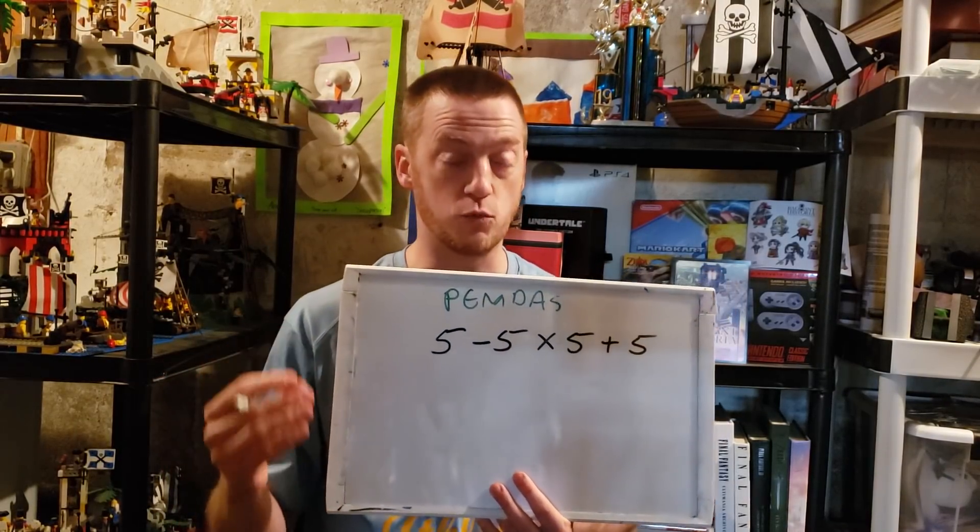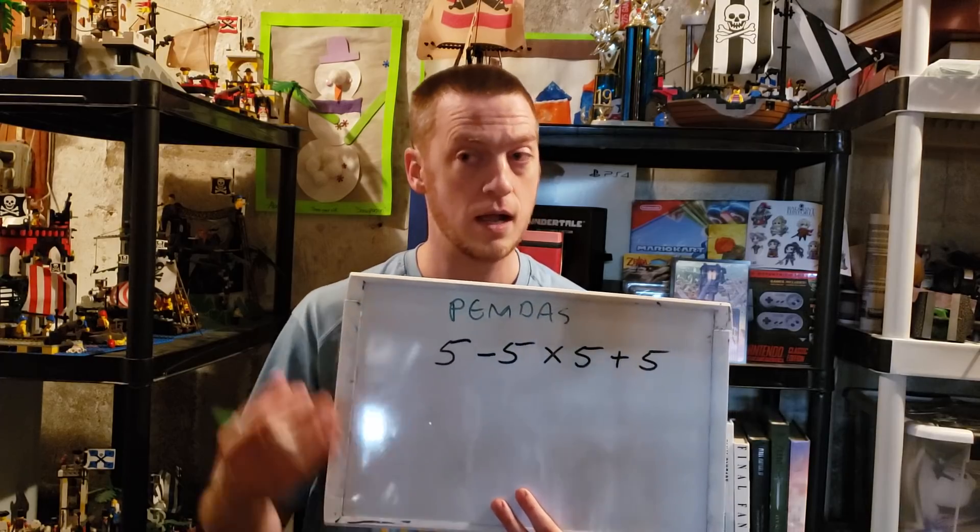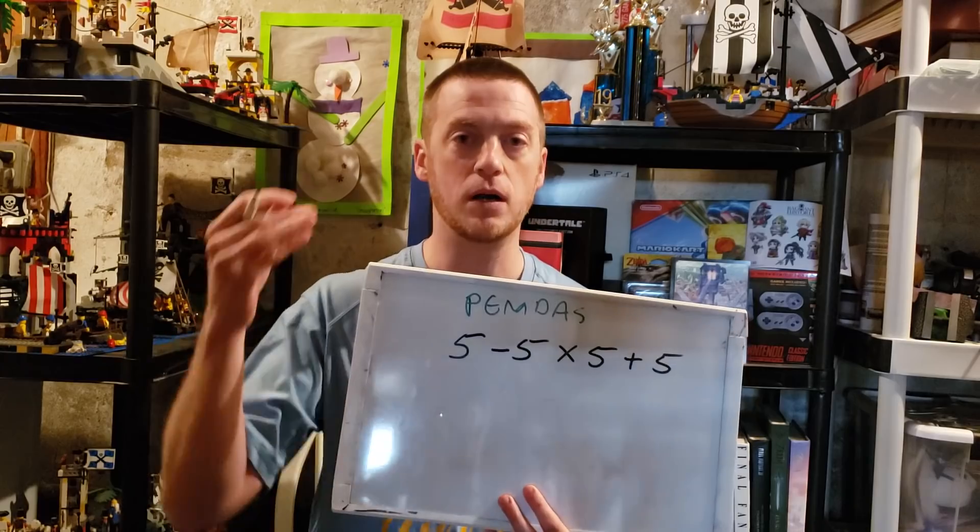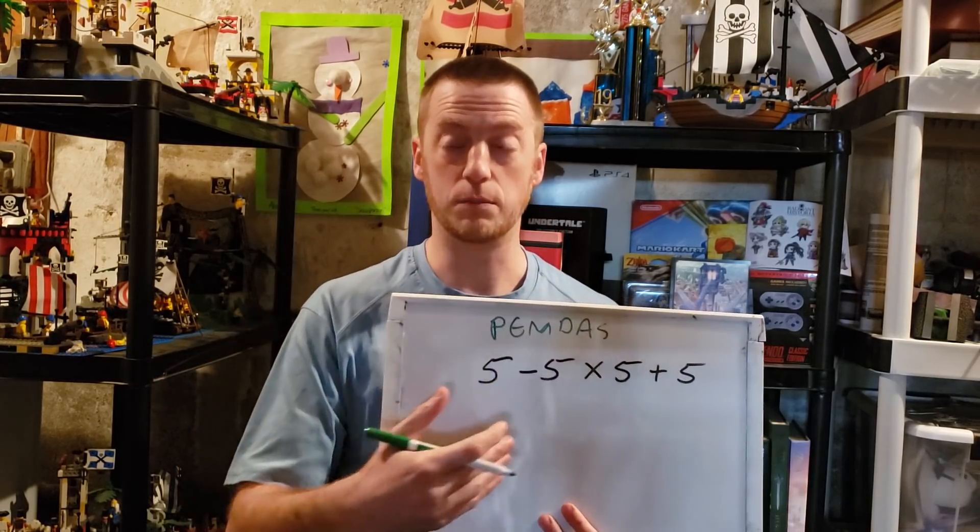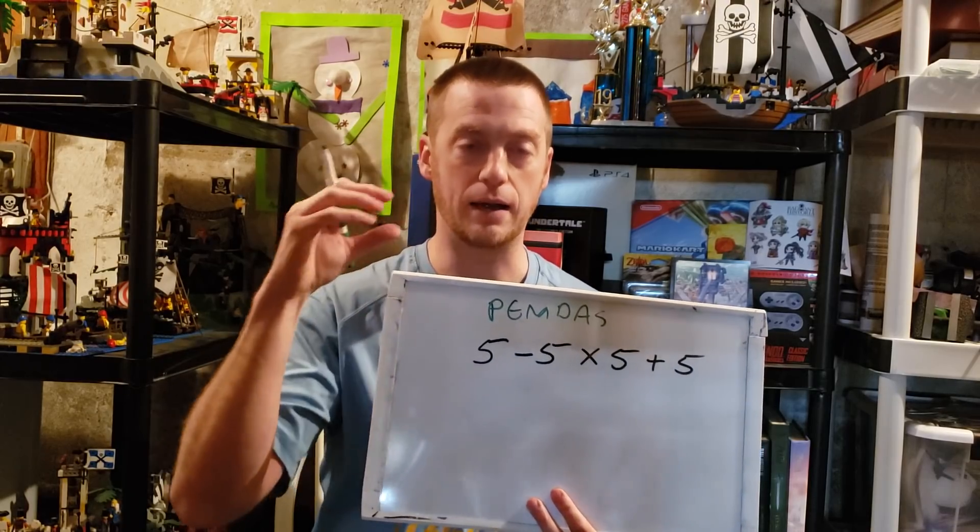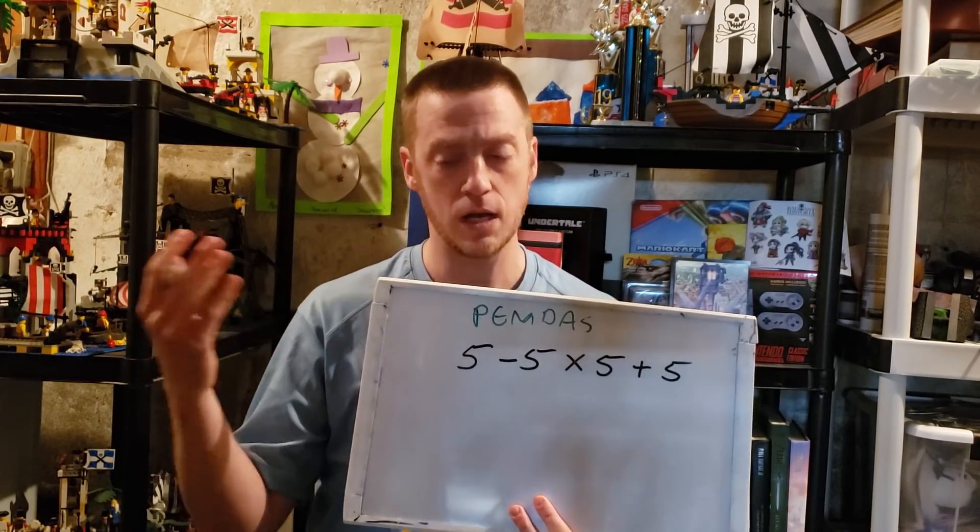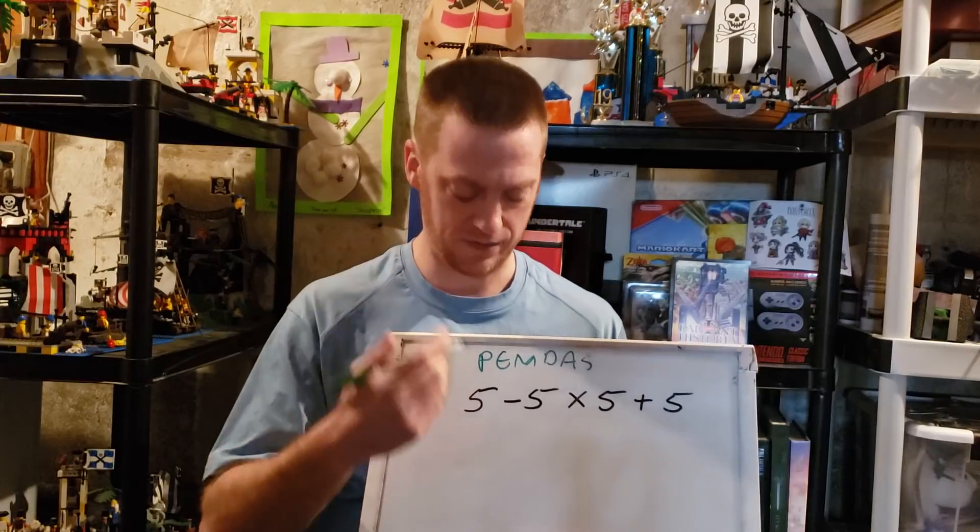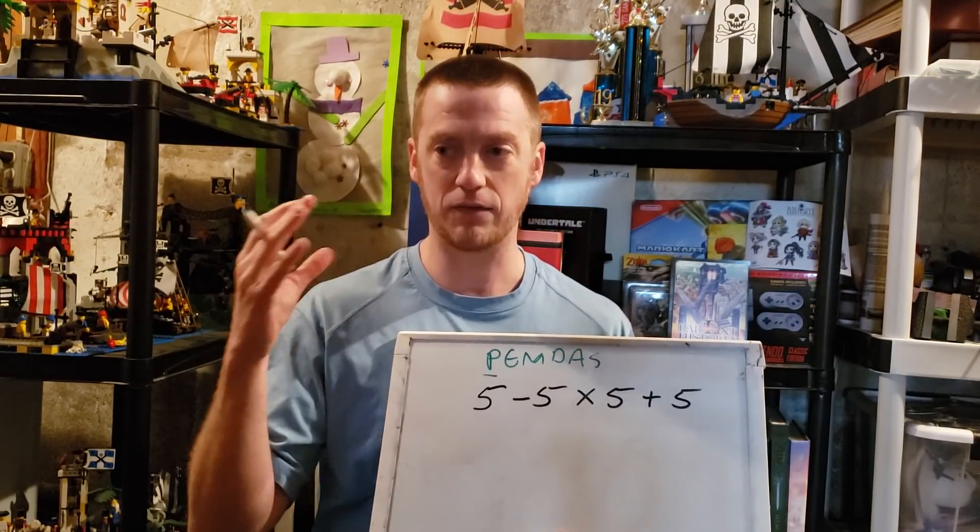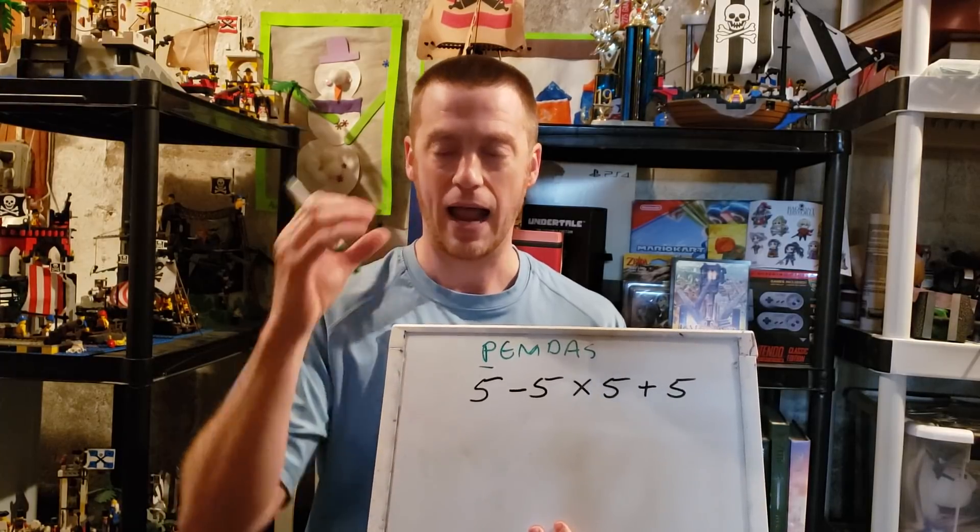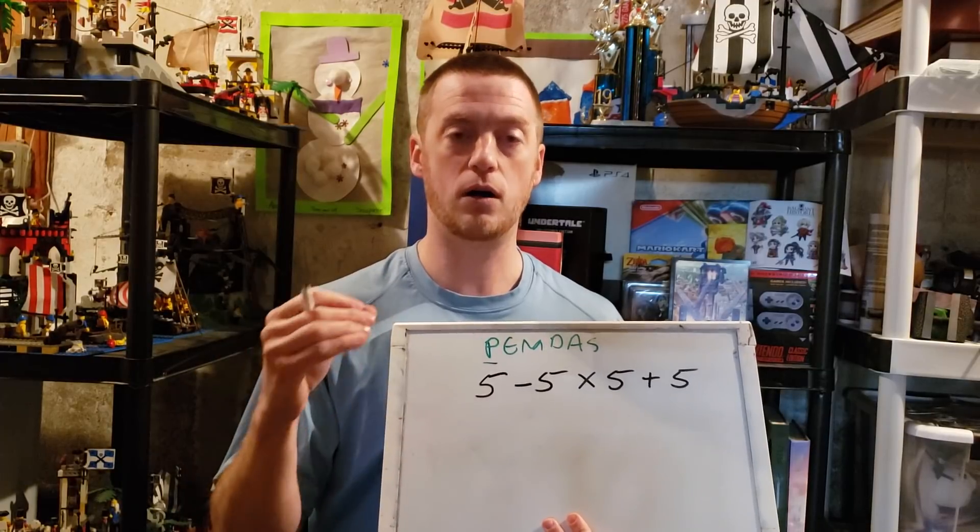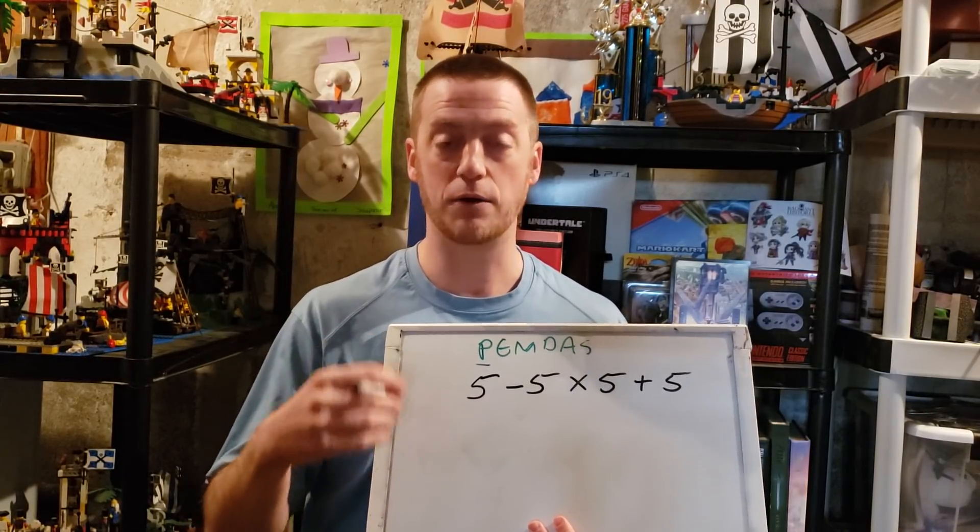They get this problem wrong because they're thinking of it as a six-step process instead of what it really is. The order of operations is really a four-step process. Don't get me wrong, PEMDAS helps because it helps you remember the correct order, but what people mess up is how to apply and how to condense these into four steps.